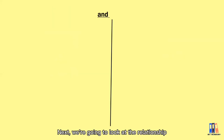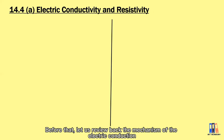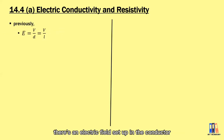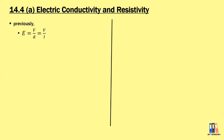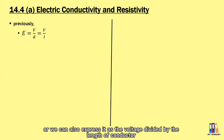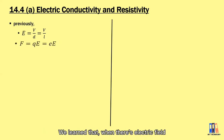Next we're going to look at the relationship between electric conductivity and resistivity. Before that, let us review the mechanism of electric conduction. When we apply a potential difference across the conductor, an electric field is set up in the conductor. The electric field strength is equal to the voltage divided by the distance, or expressed as the voltage divided by the length of the conductor.